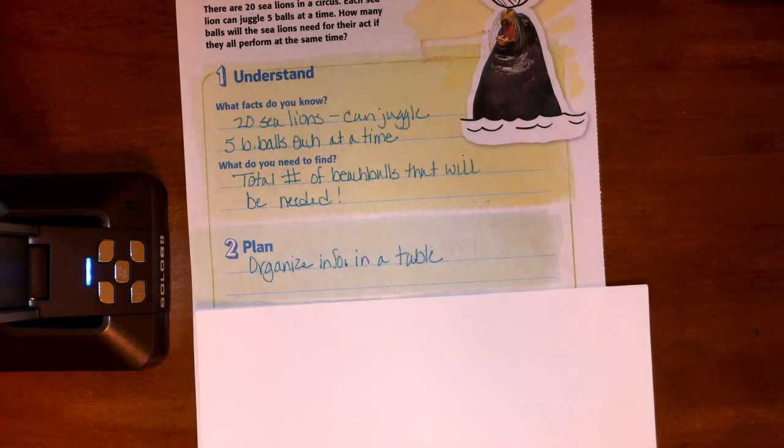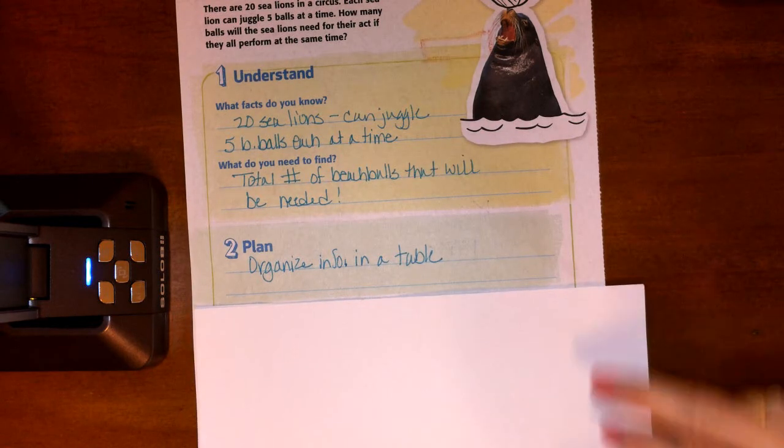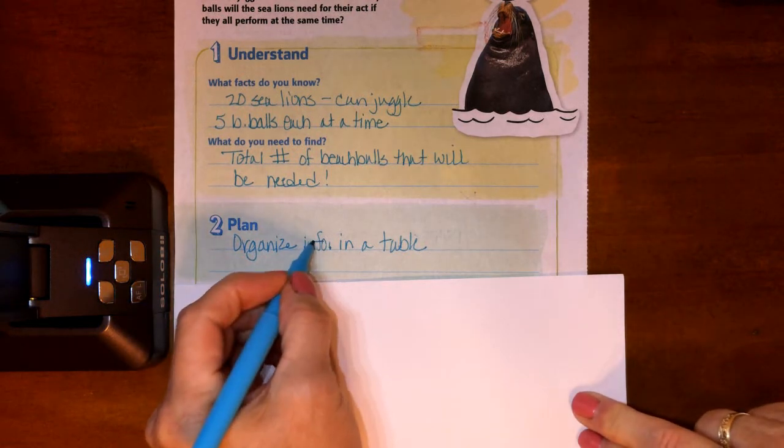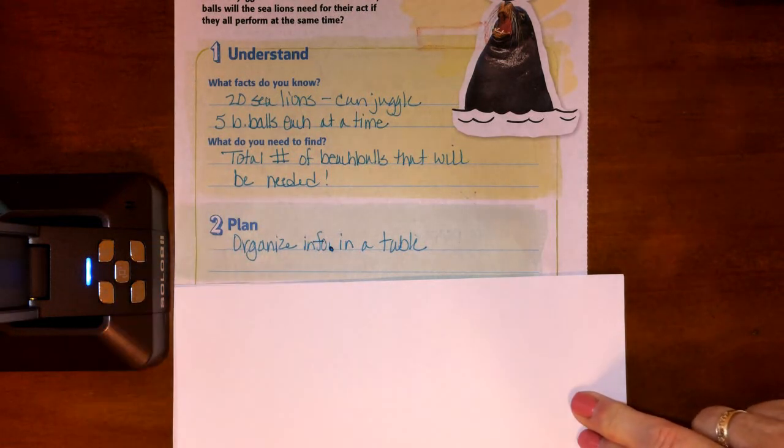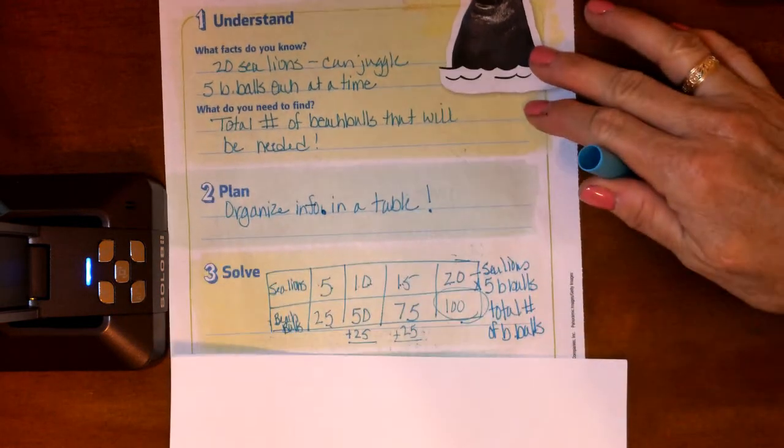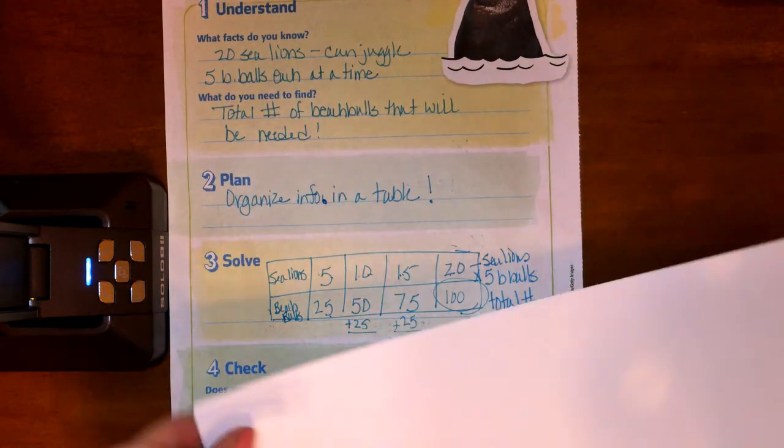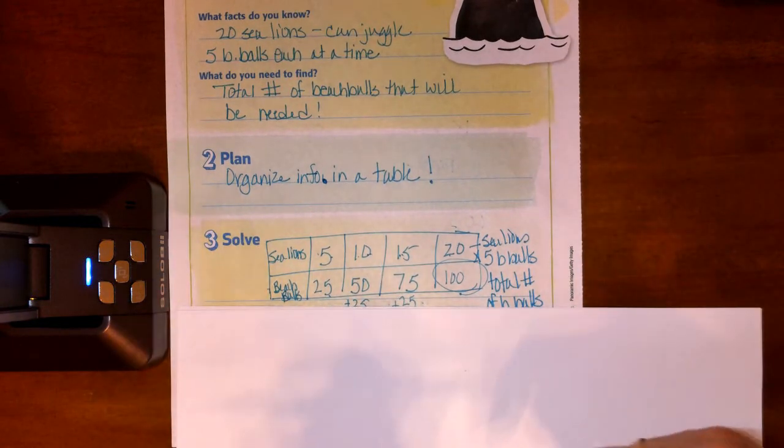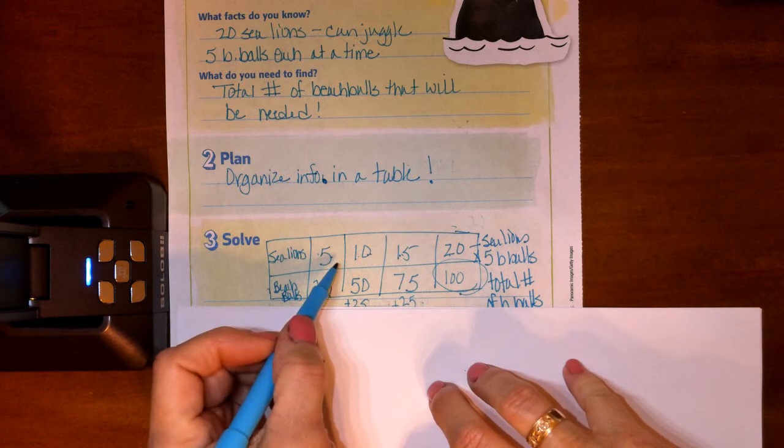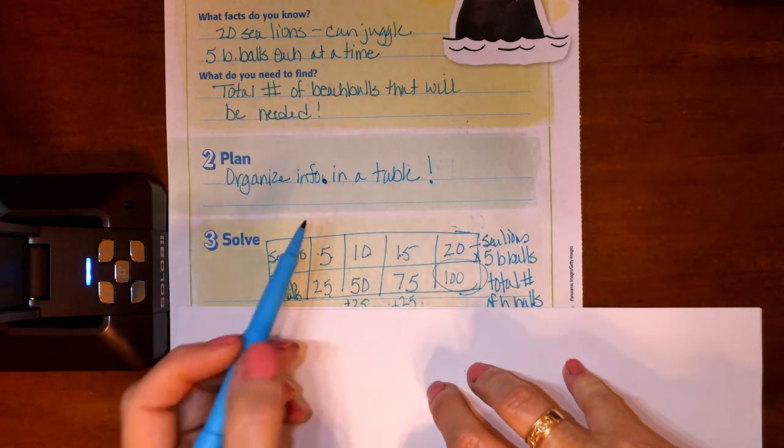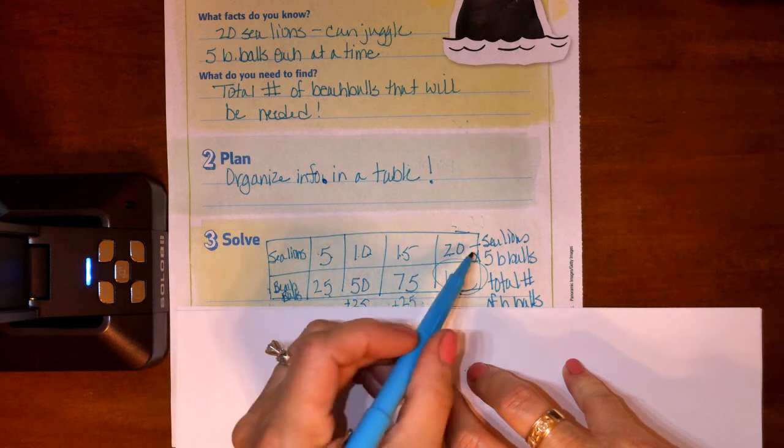And we're going to plan to organize our information in a table. I guess I don't need to write that quite so sloppy. Organize our info in a table. Okay. So you can see I built my table here. Okay. And I jumped in increments of five. It seemed simpler than doing one through 20.